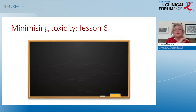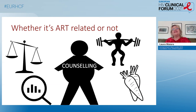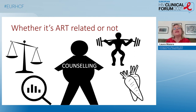Lesson six: understanding general population trends is key to interpreting new toxicities. Using weight as an example, it's really important we counsel people that weight gain may occur, explain it may not be specifically down to the drug, emphasise lifestyle — exercise and particularly diet — ensure appropriate monitoring of individuals, but also collect our data, because the more data we collect and the better we understand these changes, the better we can manage our patients.